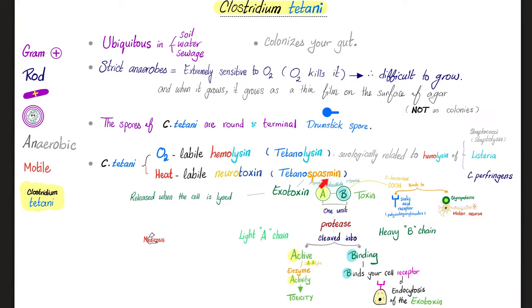Tetanospasmin is a classic exotoxin — an AB toxin. We have an A subunit and a B subunit, each a polypeptide, linked by a disulfide bond. Initially present as one unit, it is cleaved by a protease into the light A chain and the heavy B chain. A stands for active — enzymatic and catalytic activity — very toxic. B is for binding to cell receptors on motor neurons, which is why you suffer motor symptoms such as spasticity: lock jaw, sardonic smile, and hyperextension of the back.